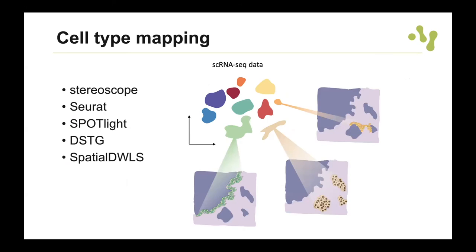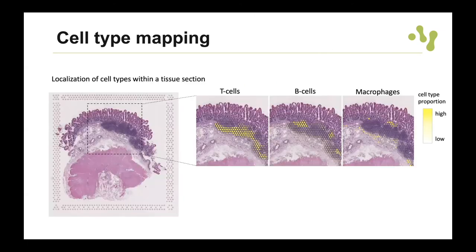One of the most interesting types of analysis is cell type mapping. There are a couple of methods from our lab for this — we have Stereoscope, also developed by Alma Andersson. What you need is a single cell RNA-seq dataset and the Visium data. The tool maps out where in the tissue the cells are located and quantifies the proportion of cells within each spot. Running this on a small intestine section using an immune cell dataset, you can clearly see the compartmentalization within lymphoid tissue and where different immune cells are localized.